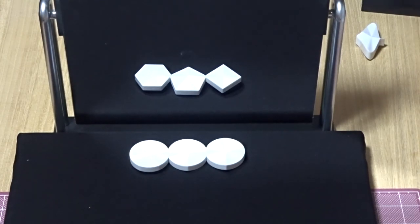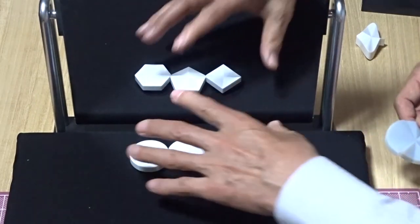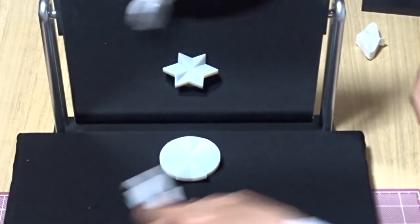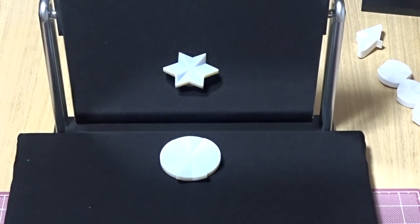The circle can change to a star shape. So the flat shape can be made from circles. Thank you very much.